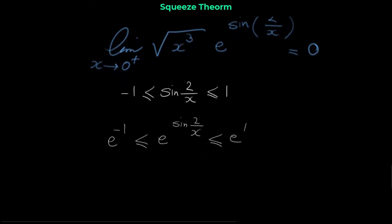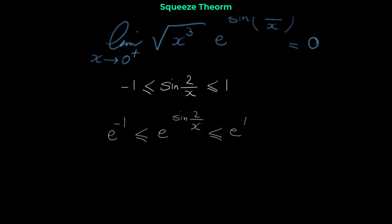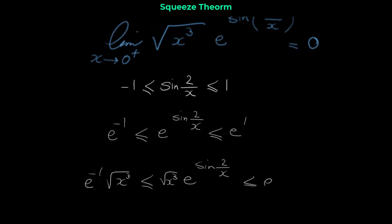Now what is the difference? That radical √(x³). So we are going to multiply both sides by the radical. Then we have: e^(−1) · √(x³) ≤ √(x³) · e^(sin(2/x)) ≤ e · √(x³).